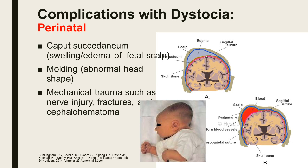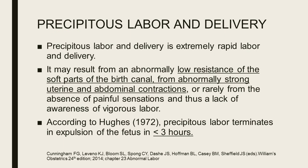The second category of complications associated with dystocia are perinatal complications. On the other extreme, we also have precipitous labor and delivery — extremely rapid labor and delivery. It may result from abnormally low resistance of the soft parts of the birth canal, abnormally strong uterine and abdominal contractions, or rarely from the absence of painful sensations and lack of awareness of vigorous labor. Usually, precipitous labor terminates in expulsion of the fetus in less than three hours.